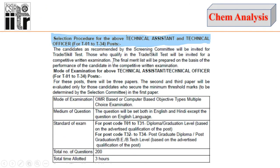Now let's see the selection procedure. For both Technical Assistant and Technical Officer, the selection will depend on two parts. First, there will be a trade or skill test. Candidates who qualify this skill test will then be allowed to appear for the competitive written examination. After the written examination there will be no viva or interview, and the final merit list will be based on performance in the written examination.